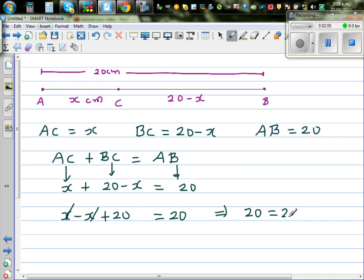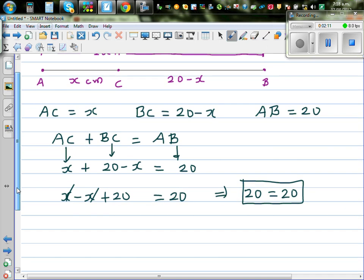So let's make this a bit interesting. Now suppose from AC you're making a square. You're making a square from AC. You cut this AC out and you're making a square. And from BC you're making an equilateral triangle.